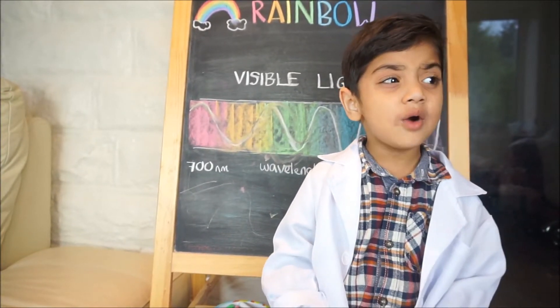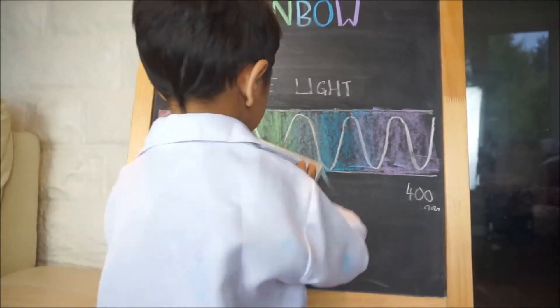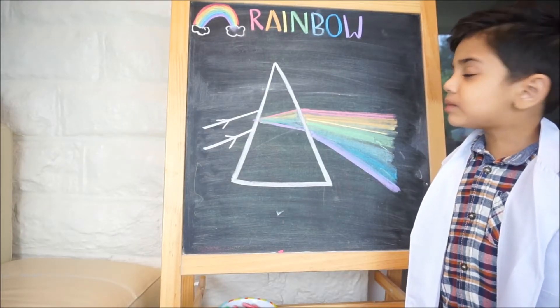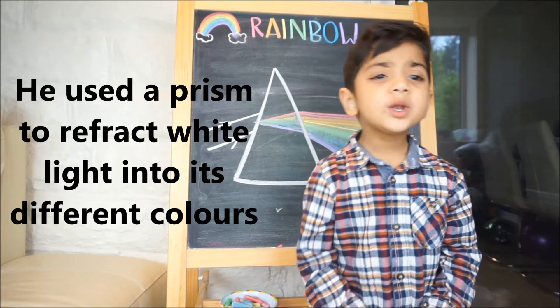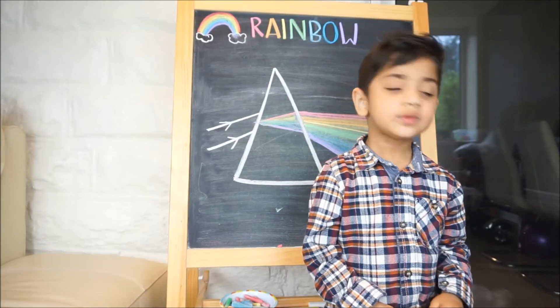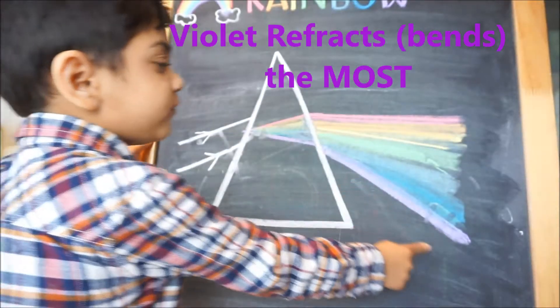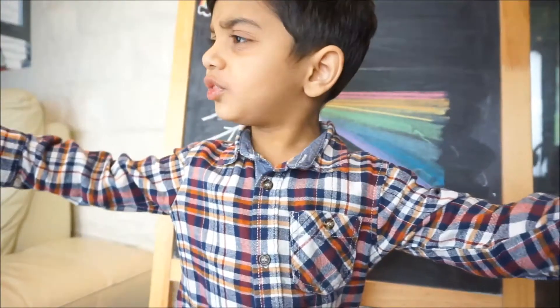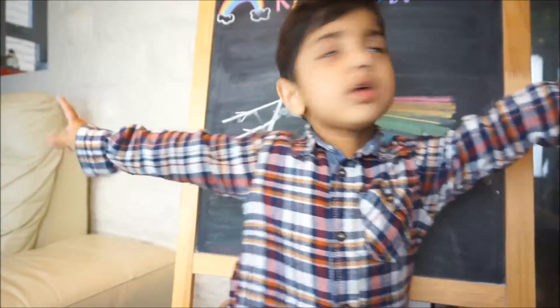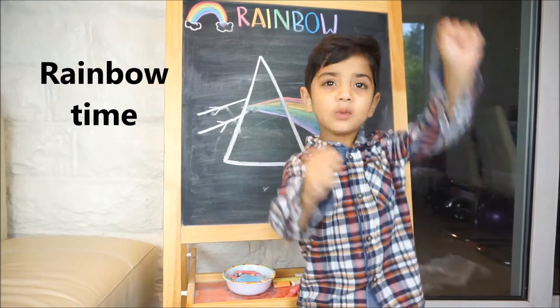I'm going to tell you about prisms now. Oh, that sounds interesting Heather! Here's a prism diagram from Mr. Isaac Newton — his experiments with light and colour. White light goes through a prism and the colours refract. Violet refracts the most and has the shortest wavelength; red refracts the least and has the longest wavelength.